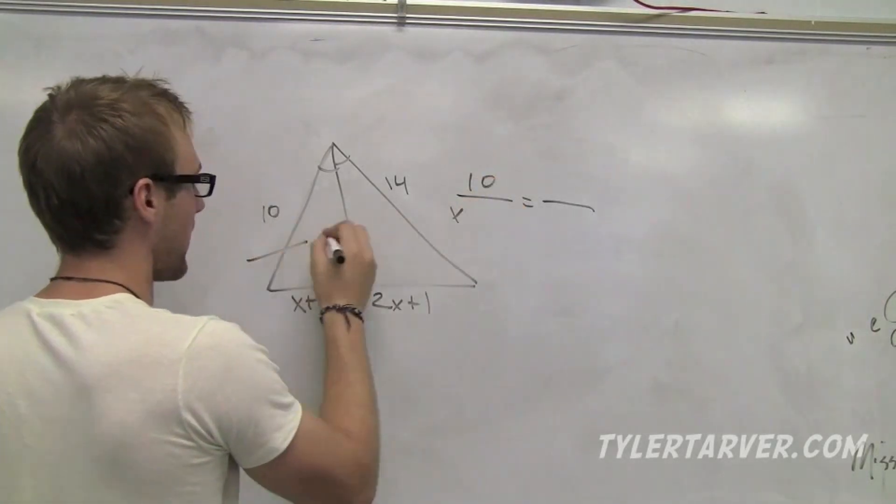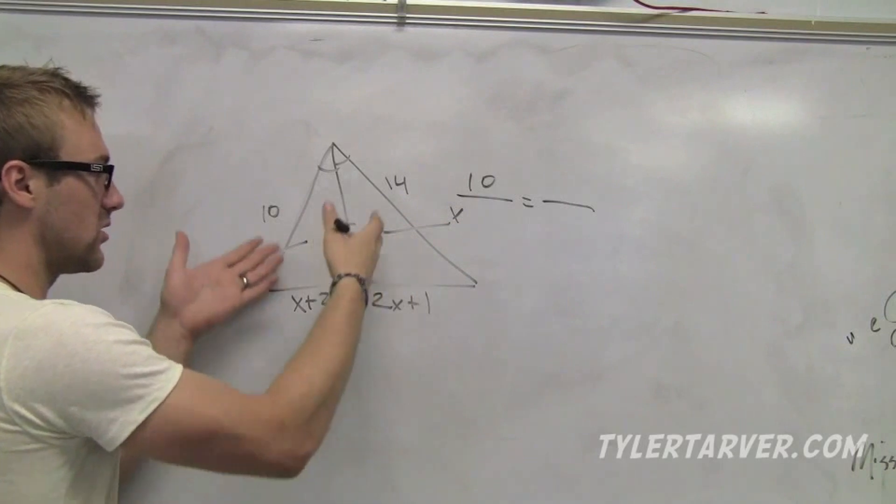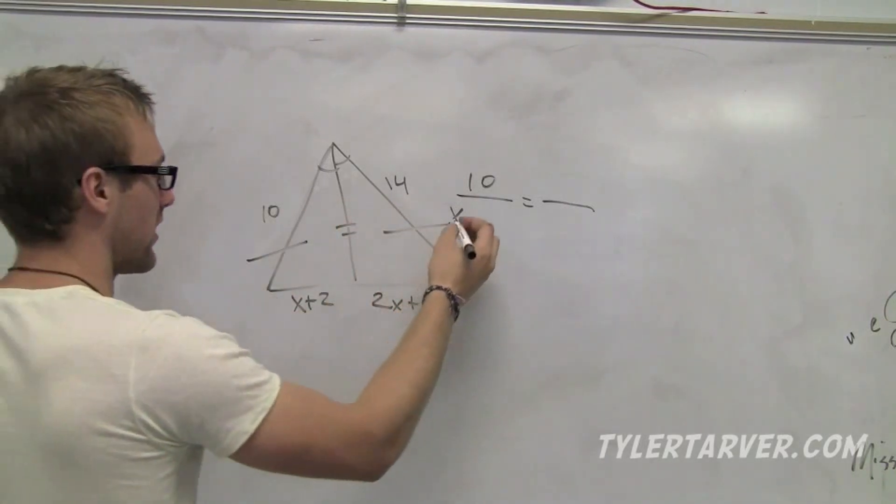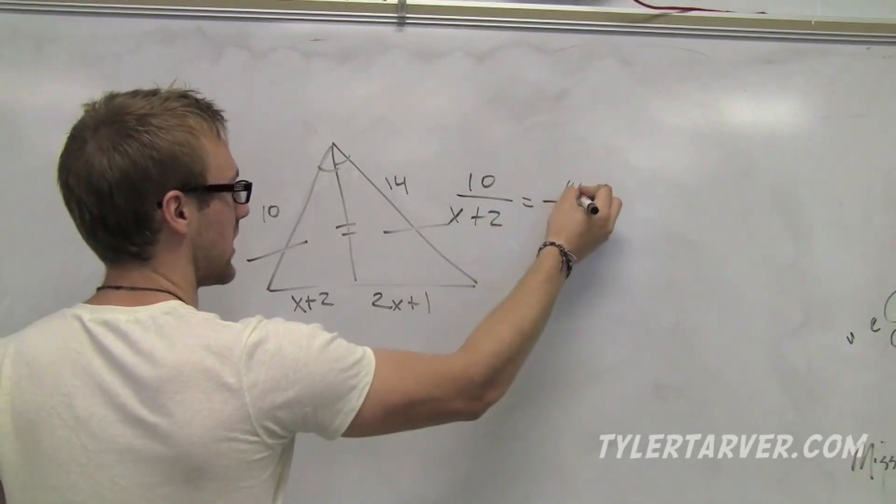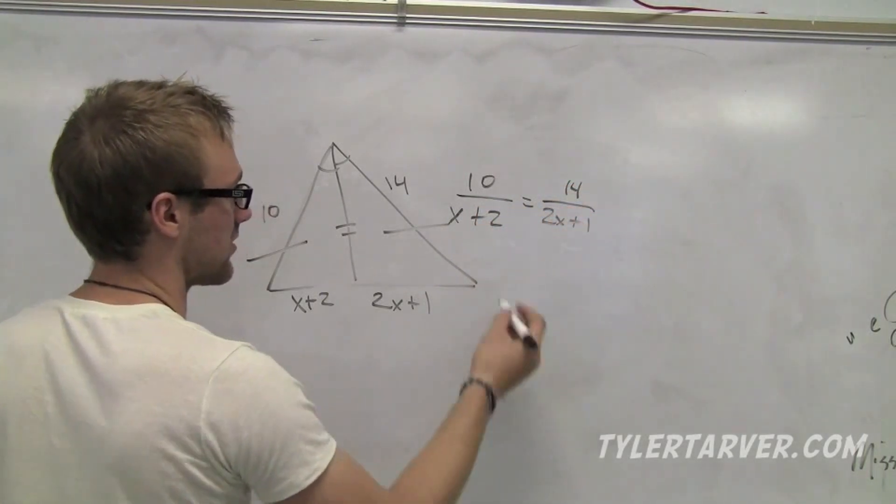Let's try 10 over, I'm going to put that over that equals that over that. Because I feel like it's easier because I can actually draw that before I even start it. That over x plus 2 equals 14 over 2x plus 1. Let's see if I did this right.